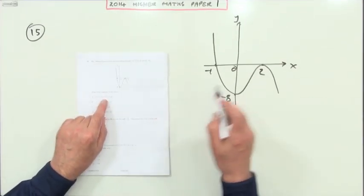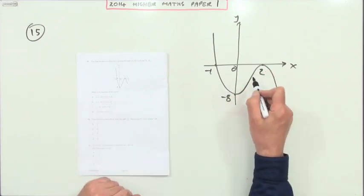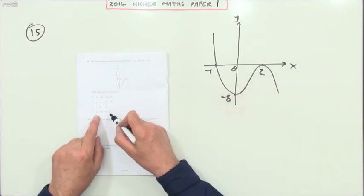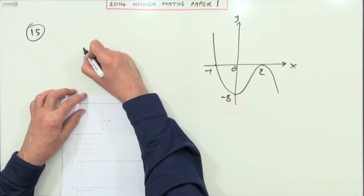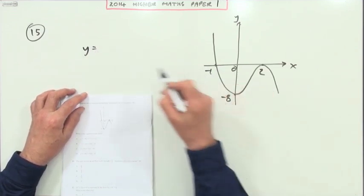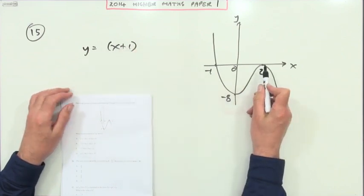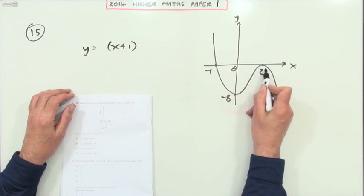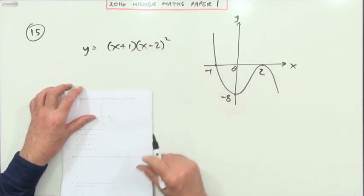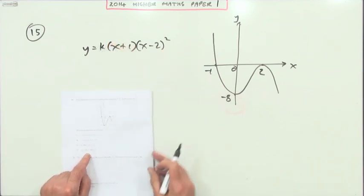Question 15 says what's the equation of this curve? Well, there's two ways you could do it. You could do it starting off with the information and getting the equation, or you could try the points and see which points fit these. Well, one thing you know for certain though is the equation must look like: it's got a root at negative 1, so it must have a factor that goes x plus 1. It's got a double, there's a tangent point there at 2, so it must go x minus 2 squared.